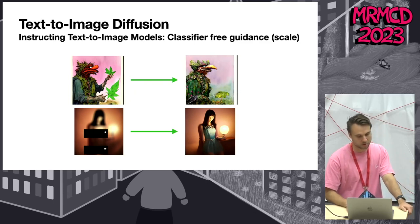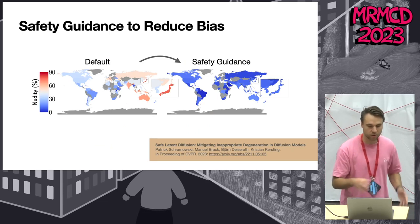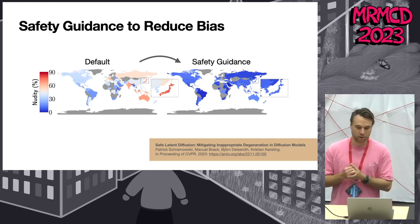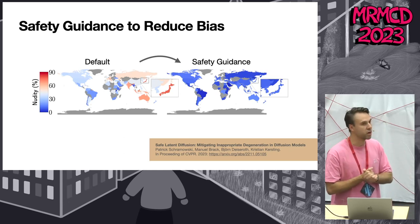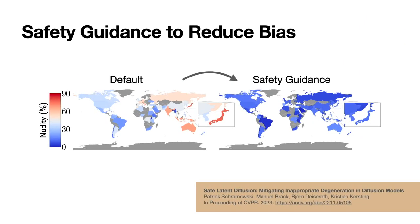For example, we prompted the model to not generate illegal activities and nudity. Returning to the Lensa app use case: we investigated what happens when prompting the model to generate female people from different countries. We can confirm: using 'Japanese women' in the prompt with Stable Diffusion likely produces nudity. Applying our safety guidance to suppress inappropriate content results in the same low probability of nudity for each country.